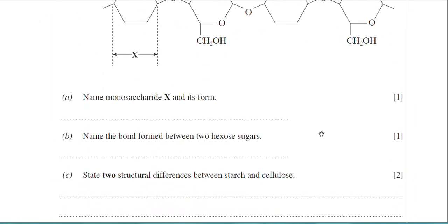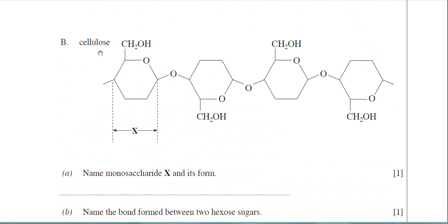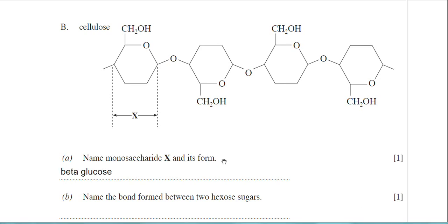If we scroll down to the actual questions now, we've got part A and it's asking you to name monosaccharide X and its form. Monosaccharide X is in the cellulose structure. Cellulose is made up of beta-glucose. I just want to explain what is meant by 'form' — lots of people get confused by this word. All it means here is isomer. So the answer to part A would be beta-glucose.